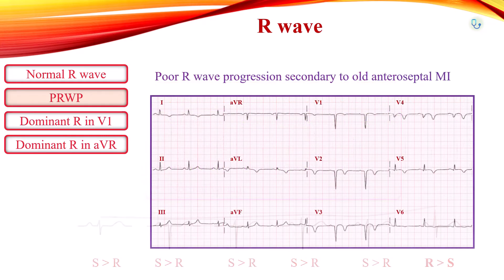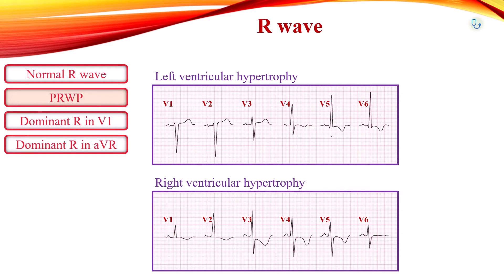In myocardial infarction, necrotic myocardium does not generate electrical potentials, resulting in smaller R-waves in the leads reflecting that area. Ventricular hypertrophy also amplifies R-wave amplitude. Left ventricular hypertrophy causes increased R-wave amplitude in left precordial leads V4 to V6 and deep S-waves in right precordial leads V1 to V3. Similarly, right ventricular hypertrophy causes larger R-waves in right precordial leads and smaller R-waves in left precordial leads.